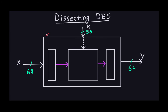This box that you see here, marked with the arrow, is what's going to do the whole computation of encryption and decryption. Now what is the internal structure? I'm going to divide it into several parts.